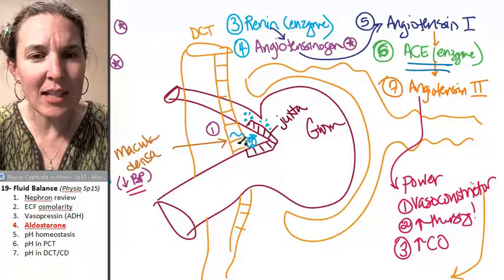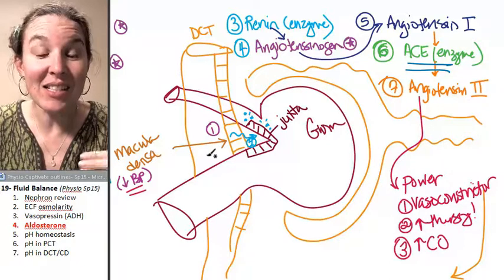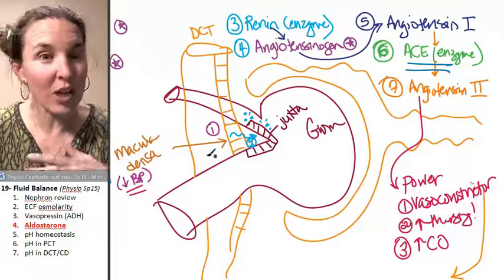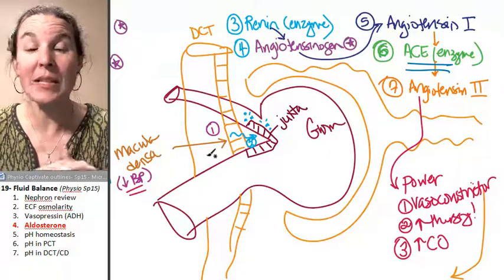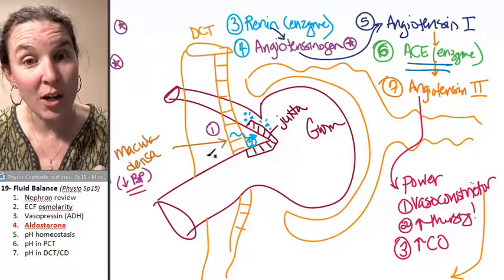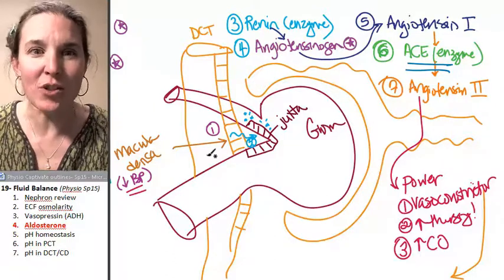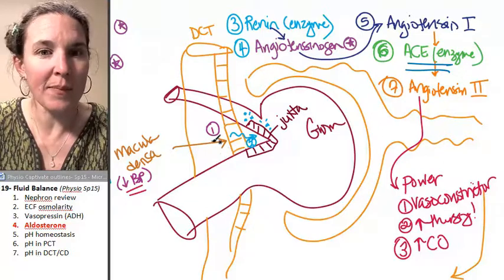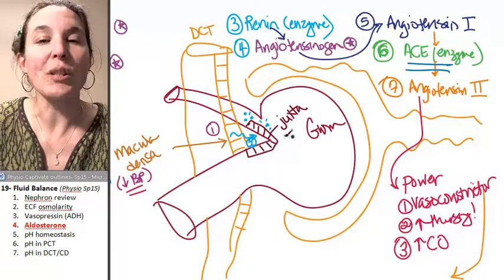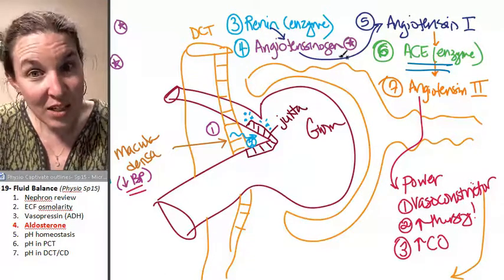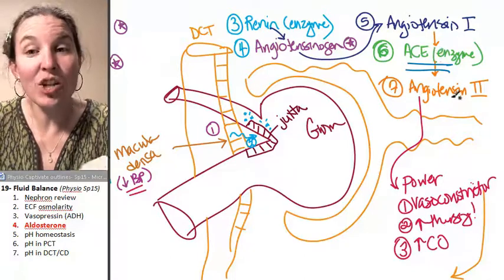We talked about how the macula densa cells actually monitor the filtrate. Well, the idea is that the macula densa cells detect low sodium which indicates low blood pressure. With low blood pressure you have low glomerular filtration rate which leaves more time for filtrate to hang out in the nephron and have the sodium removed from it. And so if you get to this point in the nephron and there's a low sodium concentration then we're going to send a message. Something's funky here. So let's produce renin which activates angiotensinogen turns it into angiotensin 1 which is acted upon by ACE and turned into angiotensin 2.